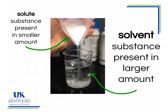The first thing we need to clarify is the difference between solute and solvent. The solute is the substance present in the smaller amount — in this case it's the salt being dissolved in the water. The solvent is the substance present in the larger amount — in this case, the water is the solvent.